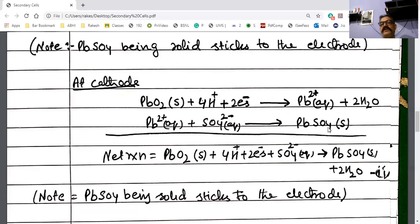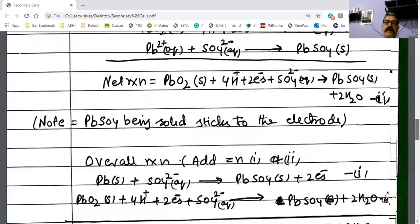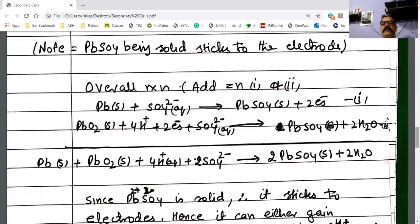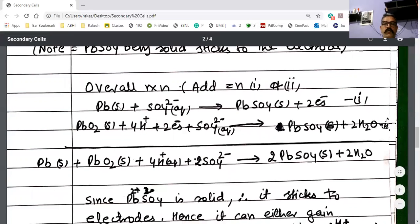So our both electrodes, whether anode or cathode, will be converted into lead sulfate. We have a layer of lead sulfate on both electrodes. In this way we can reverse these electrodes because our electrodes are not dissolved. I have written the overall reaction with both equations.